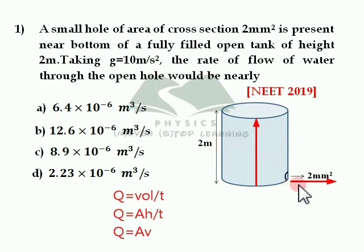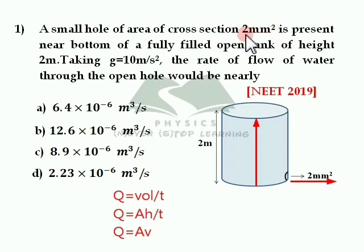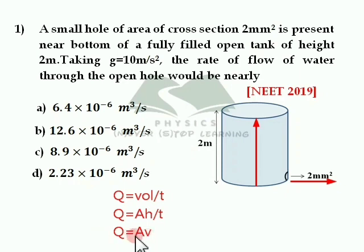The speed with which the water flows out through this hole is nothing but the velocity of efflux. For an open tank, the expression for velocity of efflux is V equal to root of 2gh. First, you need to calculate V and area. Area is given as 2 mm square, but you need to convert that into meter square: 2 mm square means 2 into 10 to the power minus 6 meter square.